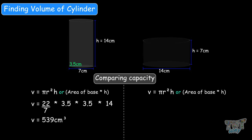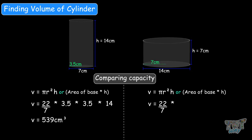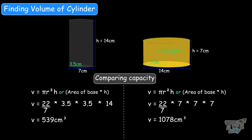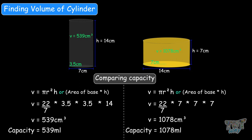Now let's find the volume of the other cylinder, which has a radius of 7 centimeters and height 7 centimeters. Following the same steps, we get a final volume of 1,078 centimeters cubed. So clearly we can see that the volume of the second container is greater than the first. In terms of capacity, since 1 centimeter cubed equals 1 milliliter, the capacities are 539 milliliters and 1,078 milliliters respectively.